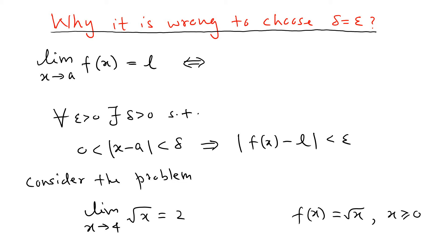That's exactly where the problem comes from. If you have a function which has a discontinuity at any point other than a, we cannot choose delta equal to epsilon — it's going to create a problem. That's why we're trying to understand this. Let's look at the argument. For this problem you always have to do rough work first to figure out the actual delta.